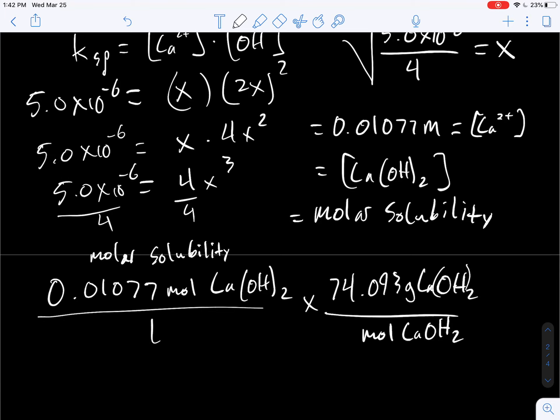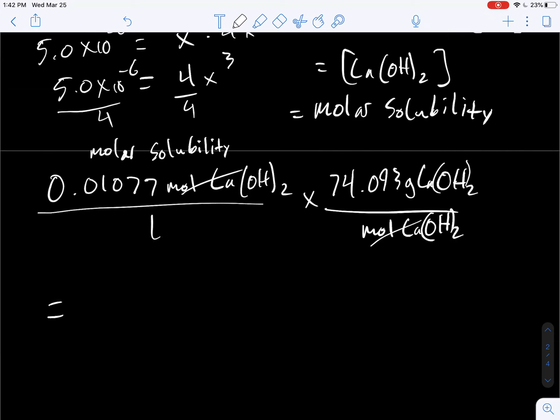I should probably put parentheses around those. And 0.798 grams per liter. That means the maximum amount of calcium hydroxide that I can dissolve in one liter of H2O is going to be a little less than a gram. That's it.